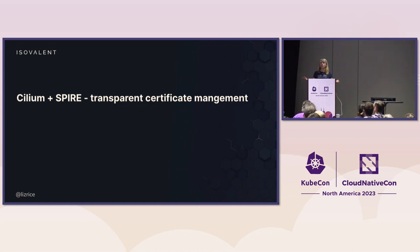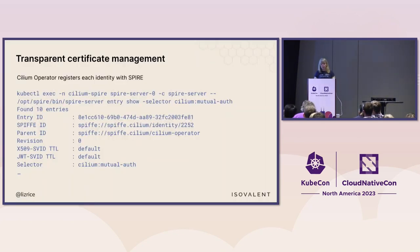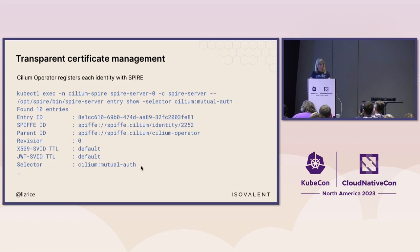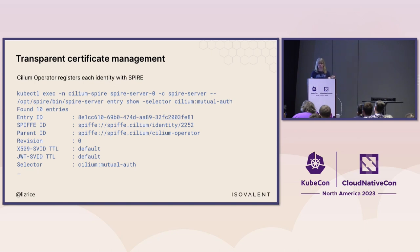Has anybody used SPIFFE and SPIRE before? SPIFFE is a way of securely providing identity management to workloads. Those workloads need to be registered with SPIRE — SPIRE is an implementation of the SPIFFE protocol. You register a workload with SPIRE and tell it something about that workload that only that workload can do — it's called a selector. A workload that can meet the selector conditions can retrieve an SVID — a SPIFFE Verified Identity Document — which in our case is in the form of an X.509 certificate.